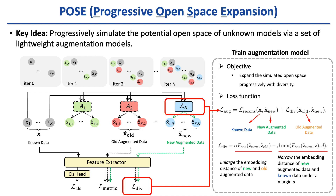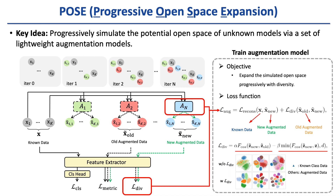The diversity loss contains two terms. The first term is to enlarge the embedding distance of new and old augmented data. Simply increasing the distance without direction would produce trivial samples also far from the known data. Hence, we apply a second term to narrow the embedding distance of new and known data. As visualized in the open space expansion progress, the diversity loss increases the diversity of open space simulated by different augmentation models.